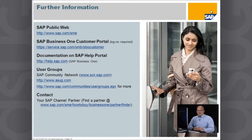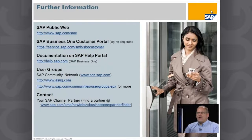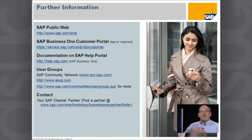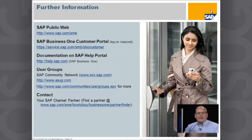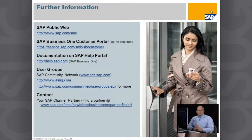Other resources include SAP's website at www.sap.com/sme for Business One information, and the SAP Community Network at scn.sap.com where you can interact with other SAP Business One users — you don't have to be a current user to join and ask questions. We pride ourselves on a strong community, including the American SAP User Group, which has a dedicated Business One chapter that's very active. Thank you for taking the time to watch today's presentation.